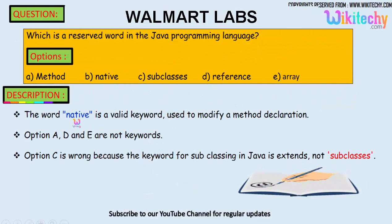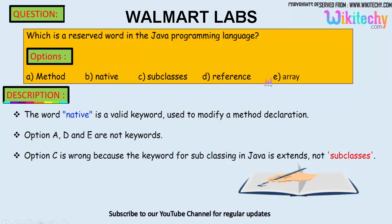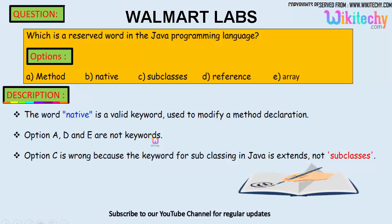The word 'native' is a valid keyword used to modify a method declaration. 'Method' is not a reserved word. 'Reference' and 'array' are not reserved words or keywords.